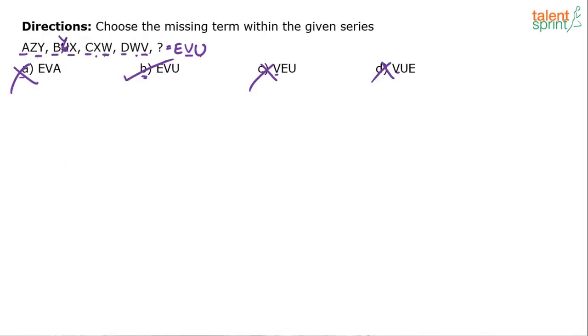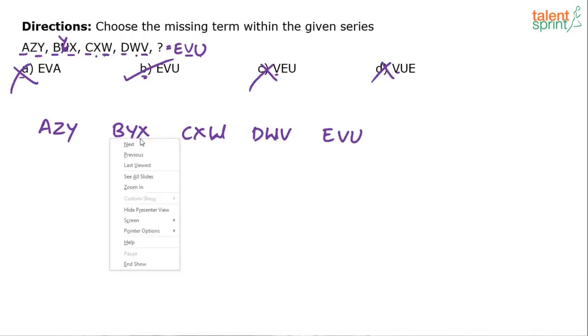So there is a printing error I guess. The second set of letters should be B, Y, X, right? So it is actually A, Z, Y, B, Y, X, C, X, W, D, W, V and then finally E, V, U. So if you observe now A, B, C, D, E, Z, Y, X, W, V, U, V, W, X, Y. Anyway, if you have got the right answer already which is B, E, V, U is the answer.